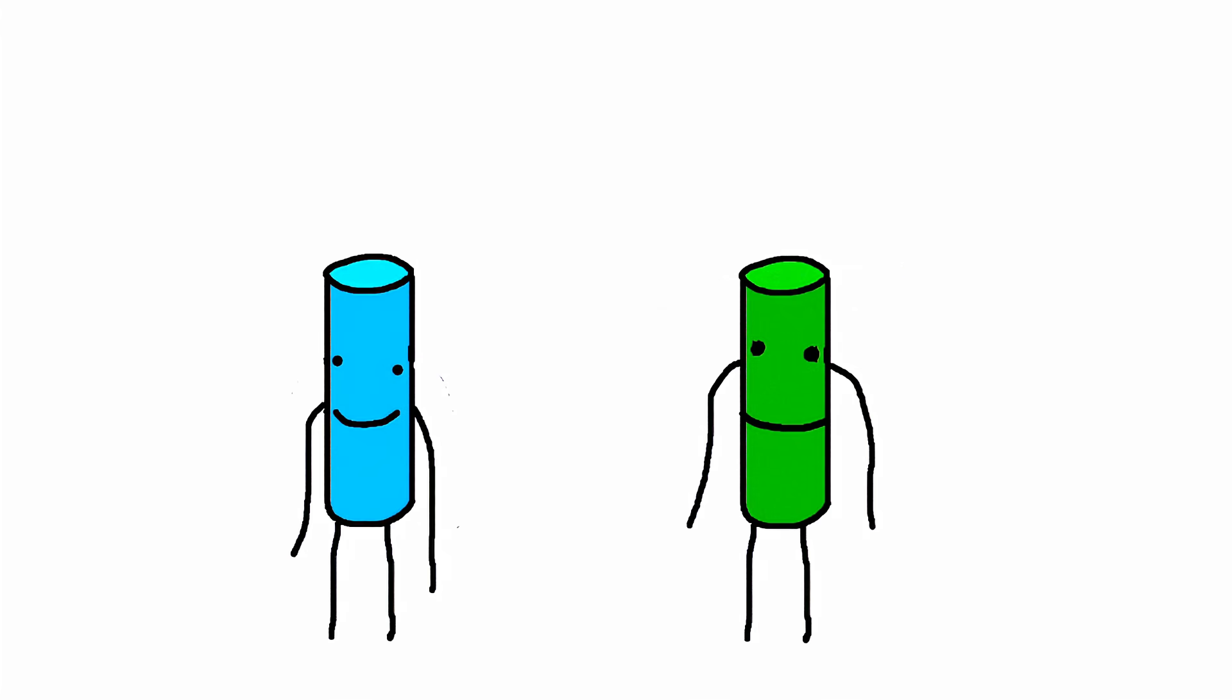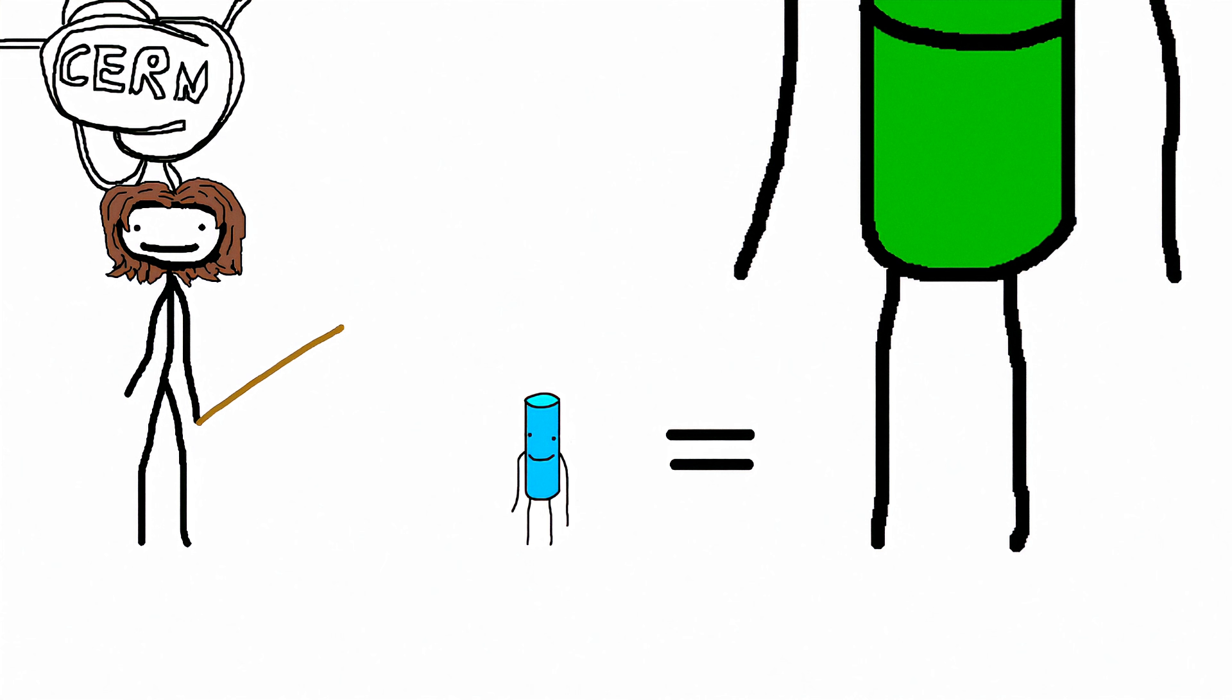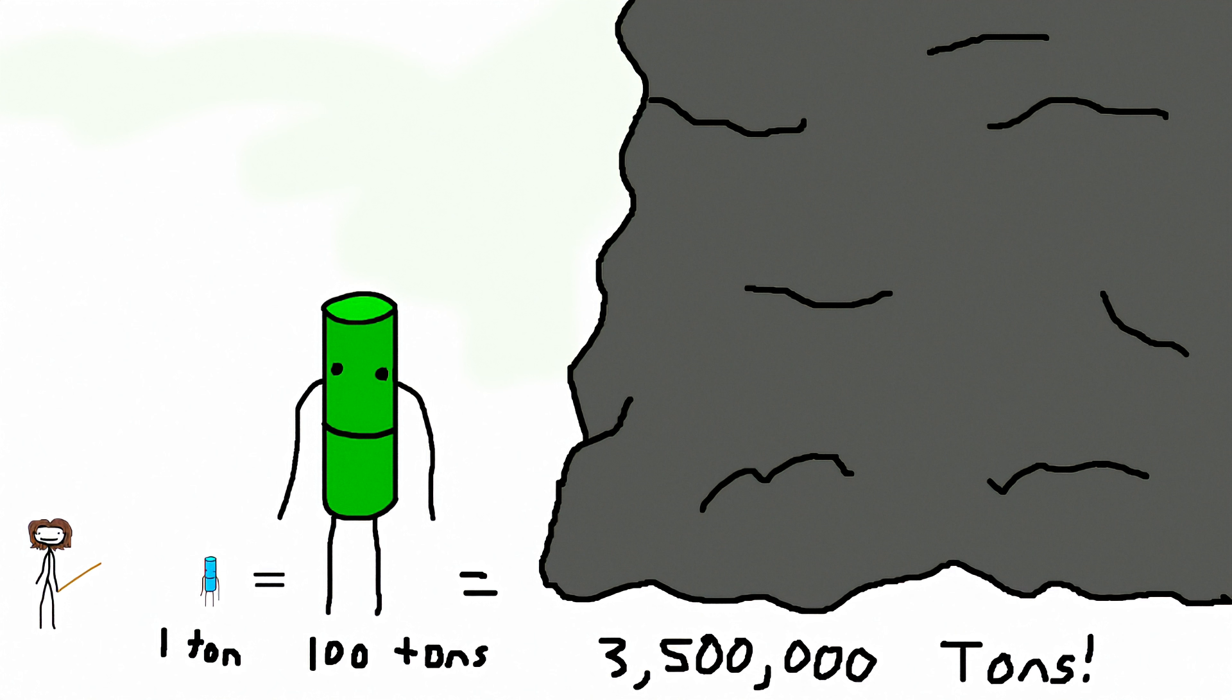But while the process for thorium is better, most of the time people care more about the results. Well, it just so happens thorium is pimping in that regard as well. CERN estimates that one ton of thorium is capable of producing as much energy as 200 tons of uranium. That's a lot. To compare, that's also equivalent to 3.5 million tons of coal.